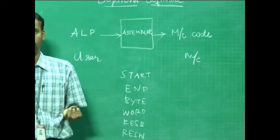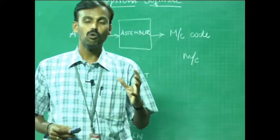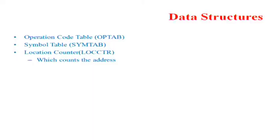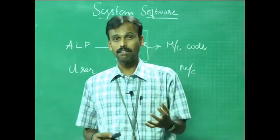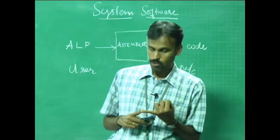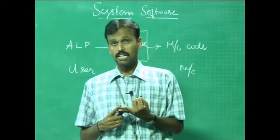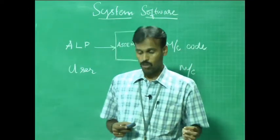The data structures that support the assembler design are: first, OPTAB — the operation code table; second, SYMTAB — the symbol table, where all symbols used in the program are stored; and third, LOCCTR — the location counter, which keeps track of all addresses.